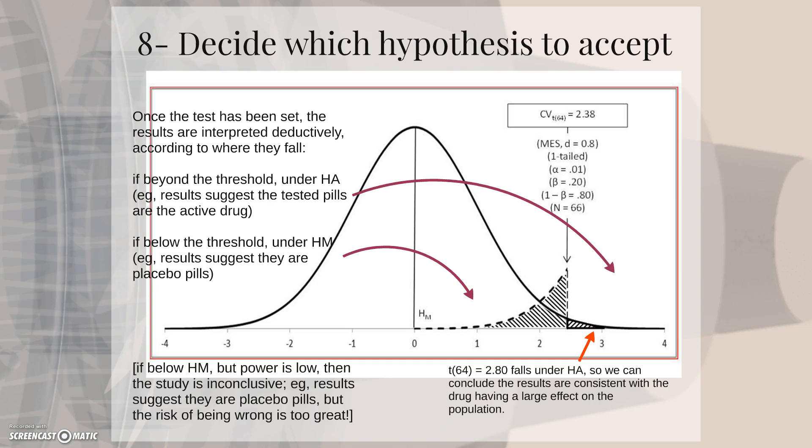If they fall beyond the threshold, then you interpret them under the alternative hypothesis. For example, the results suggest the tested pills are the active drug. If however they fall below the threshold under the main hypothesis, it will be interpreted under this main hypothesis. For example, the results suggest they are placebo pills.